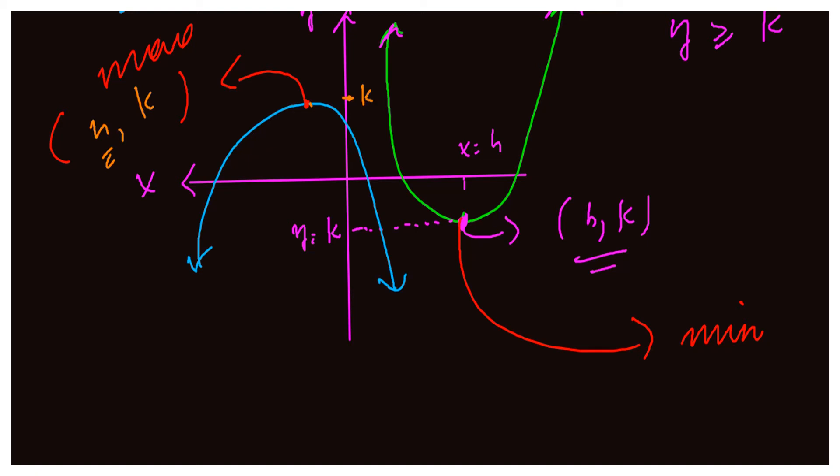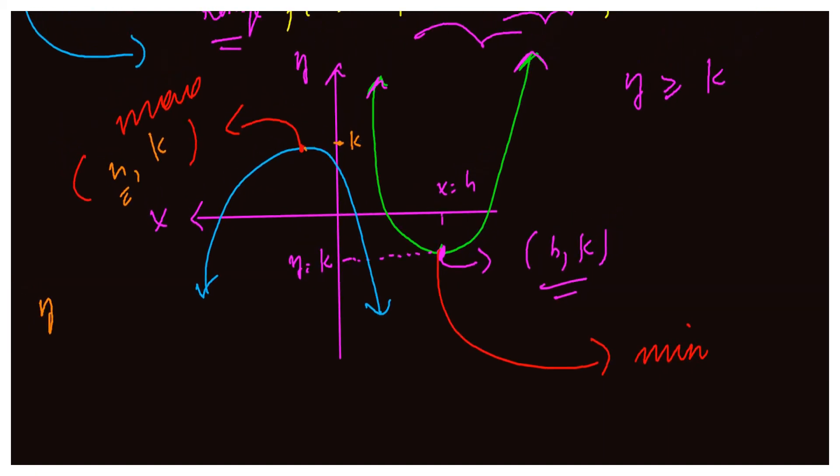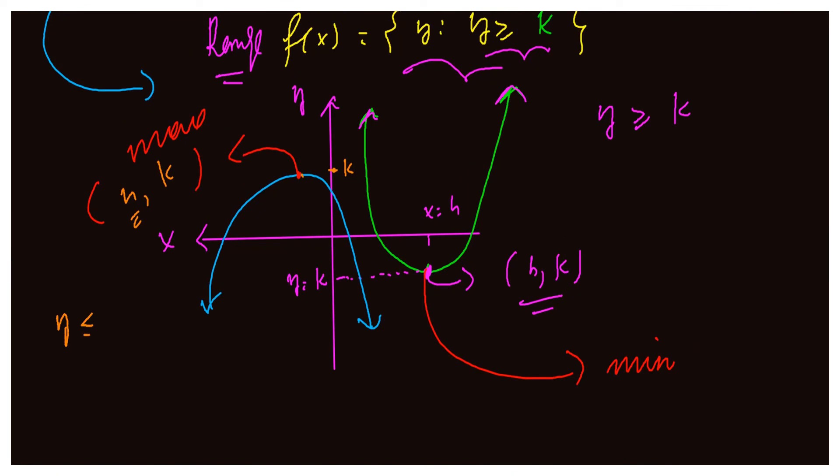So for the downward parabola, the range of our function will be all values of y less or equal to k. So the quadratic function, domain, or real numbers. Range again, if it is upward parabola, y greater or equal to k. And if it is downward parabola, it will be y less or equal to k.